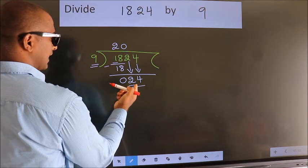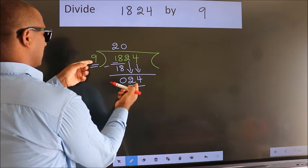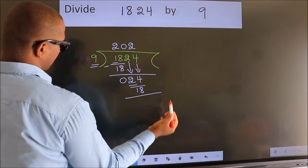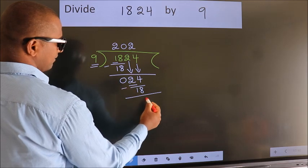A number close to 24 in the 9 table is 9 twos, 18. Now we subtract. We get 6.